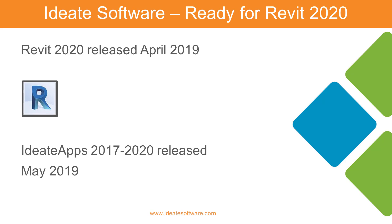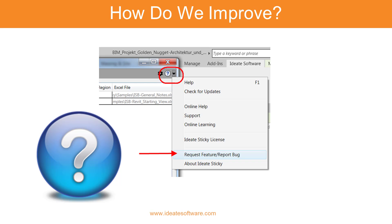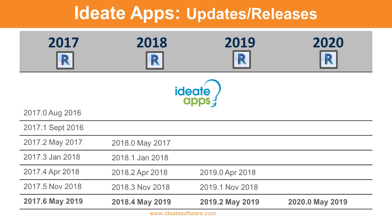Revit version 2020 became publicly available in April 2019, and in May 2019 Ideate Software released a new version of Ideate Apps. Before we cover the Ideate Apps improvements, I want to thank all of those who help us improve. Our customers and beta testers are a vital part of our design and quality control process. The May 2019 release of Ideate Apps impacts versions for Revit 2017 through 2020, as shown here.